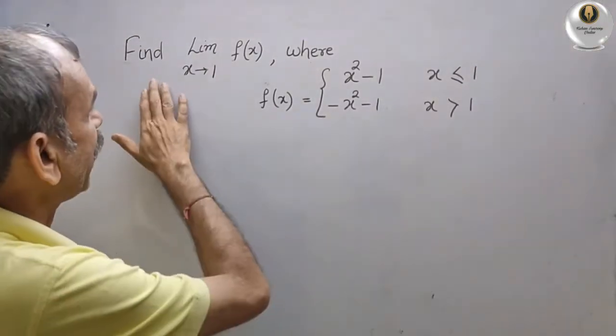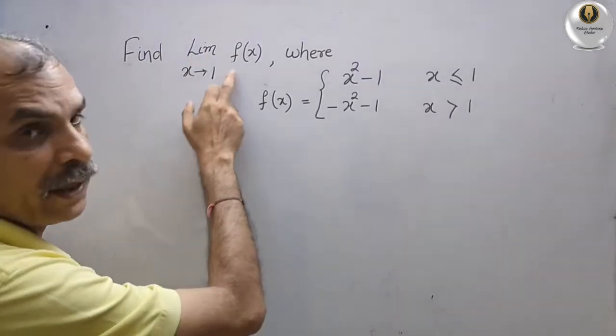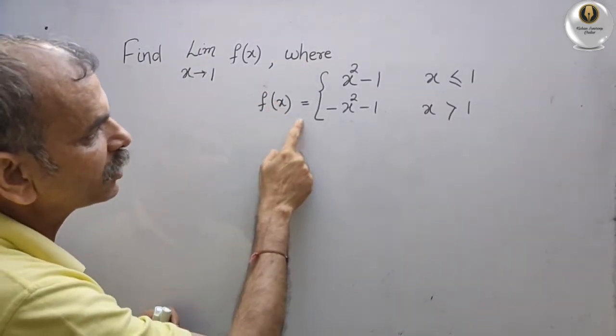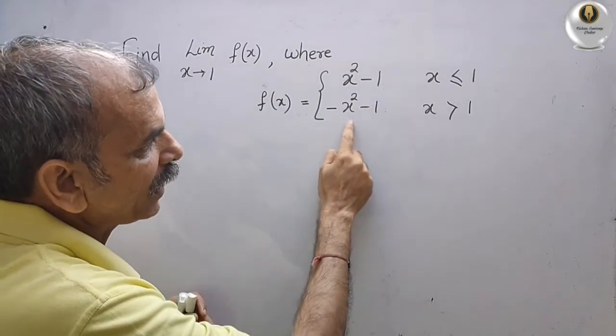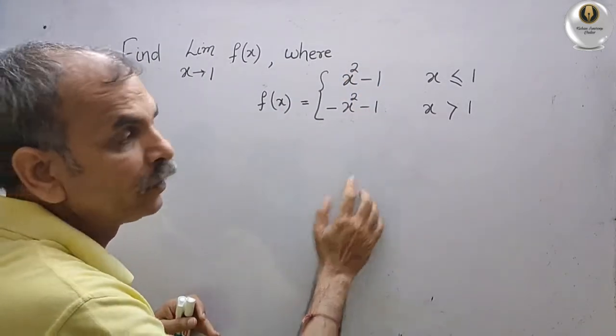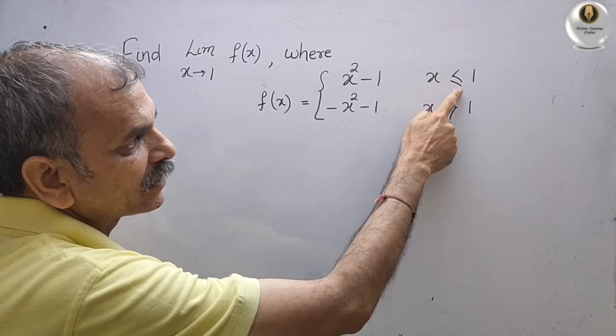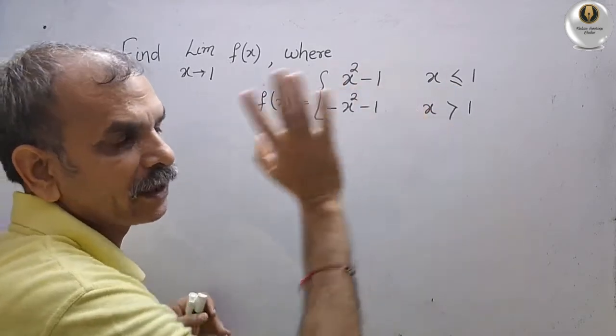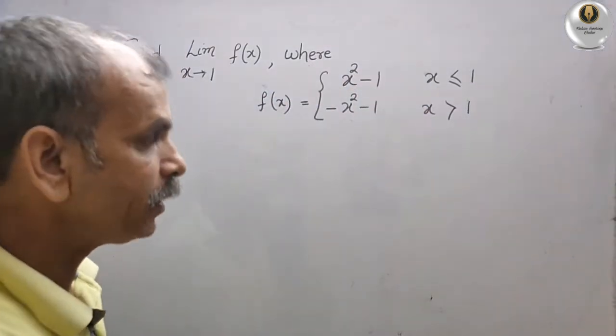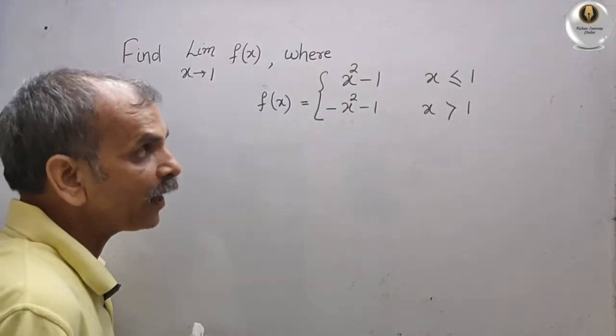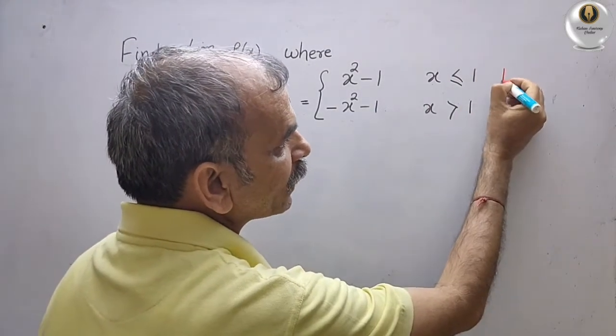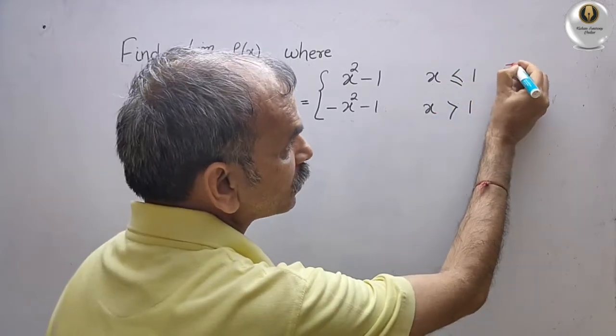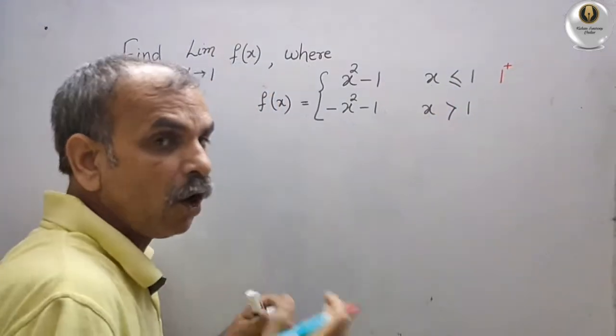Your question is find limit x tends to 1 of f(x), where f(x) is equal to: we've got two conditions. x squared minus 1 for x less than or equal to 1, and minus x squared minus 1 for x greater than 1.